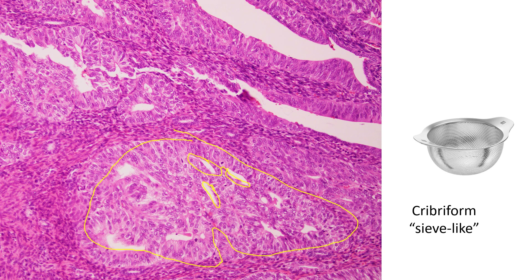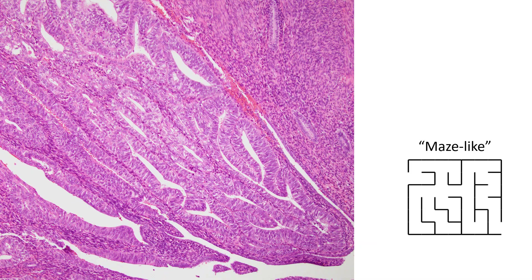Another term used to describe architectural complexity in endometrial adenocarcinoma is maze-like growth. Here you have a really complex branching pattern of glands — each gland space, each branch, is getting right up next to the other one with basically no intervening endometrial stroma. This is another finding that would qualify for endometrioid adenocarcinoma.